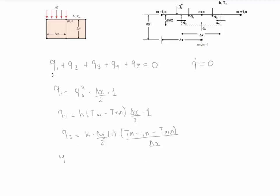Then we have Q4. Q4 is going to be K over delta Y divided by 2 thickness of 1 T M plus 1 N minus the node divided by the path that it crosses delta X.